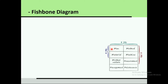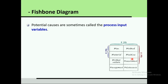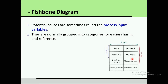The primary factors in a fishbone diagram are often called the Six M's: Man, Method, Machine, Measurement, Maintenance, Mother Nature (also called environment), and Management. These are the most common M's used. The potential causes are sometimes called process input variables and are grouped into these categories for easier sharing and reference.